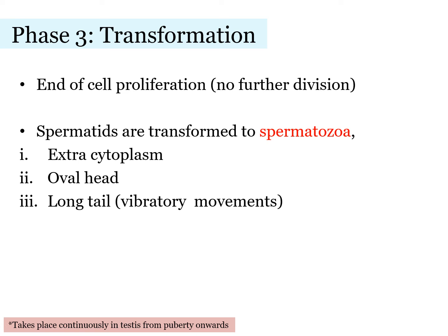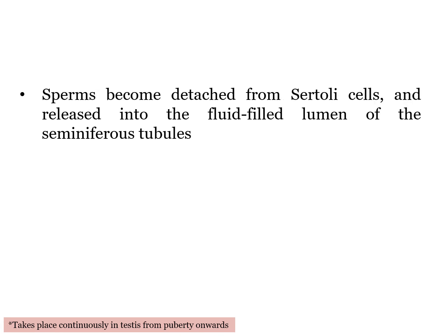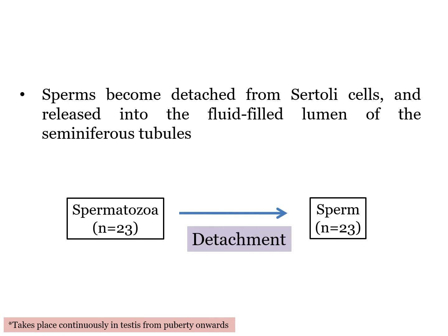Moving on to Phase 3, transformation. There is no more cell proliferation or division at this stage. In transformation, spermatids are transformed to spermatozoa through a differentiation process, in which the Sertoli cells in the walls of the seminiferous tubules support and nourish the immature cells by giving them nutrients and blood products. Spermatozoa is a transformed cell with more cytoplasm, an oval head, and a long tail. Spermatozoa will then detach from the Sertoli cells and release into the fluid-filled lumen of the tubules, where they can swim freely and are now called sperm.